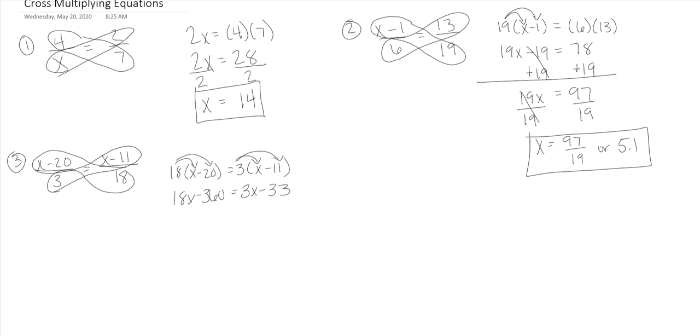18X minus 360 is equal to 3X minus 33. Then we're gonna move the 3X to the other side to get all the variables on one side. That gives us 15X minus 360 is equal to negative. Don't forget about that negative. The signs stay with the number that are behind them. So it's negative 33.